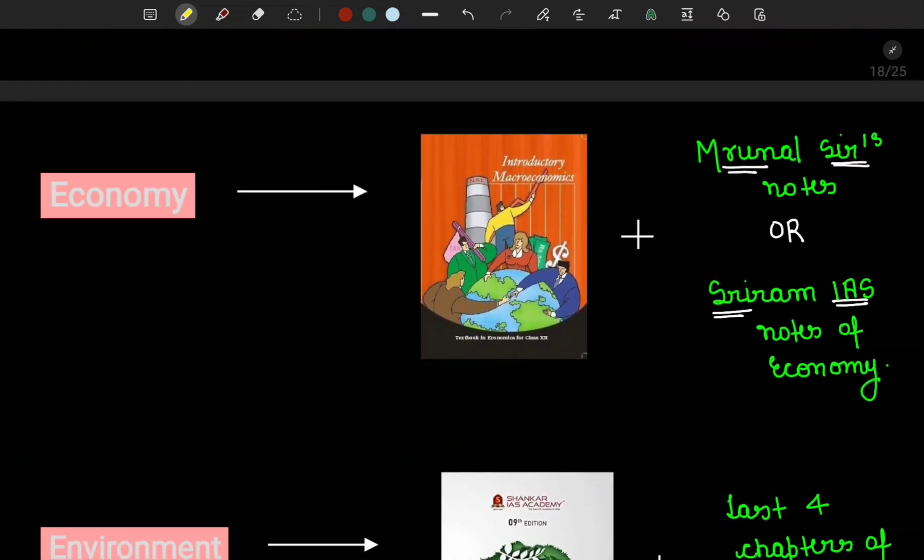For economic resources, for basic understanding we have to read 12th class macroeconomics NCERT. One is microeconomics which we don't need to read, only macroeconomics. After that, there are two options. Many students follow Mrunal Sir's notes which are around 1200-1300 pages. If you can follow them, that's very good.